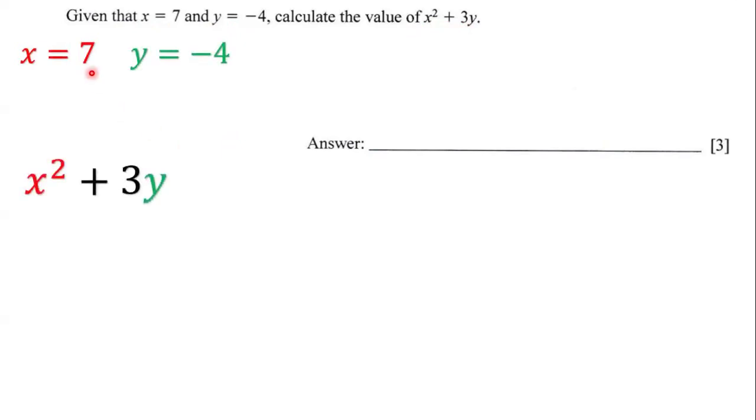Indeed, x is equal to 7 and y is equal to negative 4. So wherever we see x, we're going to put 7. Wherever we see y, we're going to put negative 4. And so we have 7 squared plus 3 times negative 4.